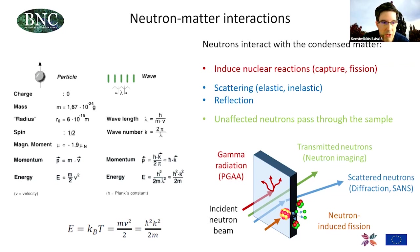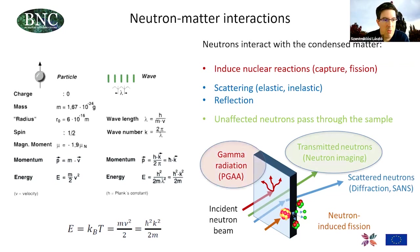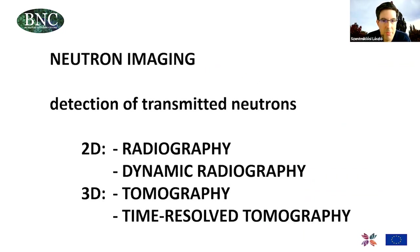In this lecture I will talk about transmitted neutrons, which is utilized in neutron imaging, and I will also mention prompt gamma activation analysis, which is based on a nuclear reaction called radiative neutron capture. The first part of the lecture will be dedicated to neutron imaging, which can be further divided into categories.